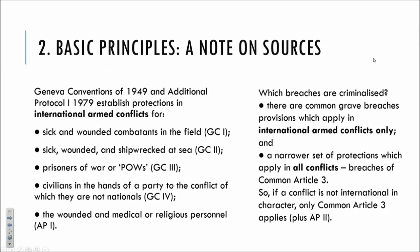If a conflict is not international in character, as far as treaty law goes, all we've got is Common Article 3 plus the provisions of Additional Protocol 2 on non-international armed conflicts, if the relevant parties are governed by it. So the first important point is: in international armed conflicts there is a wider set of criminal standards, and there is a narrower set of criminal standards in a non-international armed conflict.